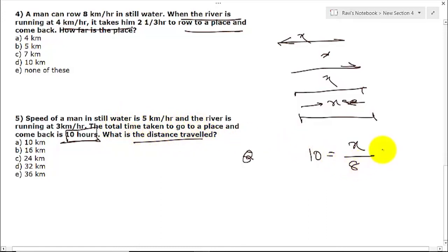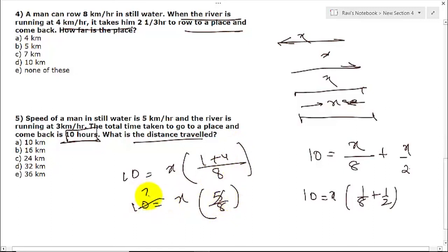Going to a place is 8, coming from there - difference of these two is 2. Let us take the bracket out: 1 by 8 plus 1 by 2. So we have got 10 equals x times this. Let us simplify it. LCM will be 8, so 10 x equals 5 by 8. This will be 2, so x will be 16. Now they have asked you the distance traveled, not the distance between two places. While going x, while coming x, so 2x. That is 32. So the value would be option D.